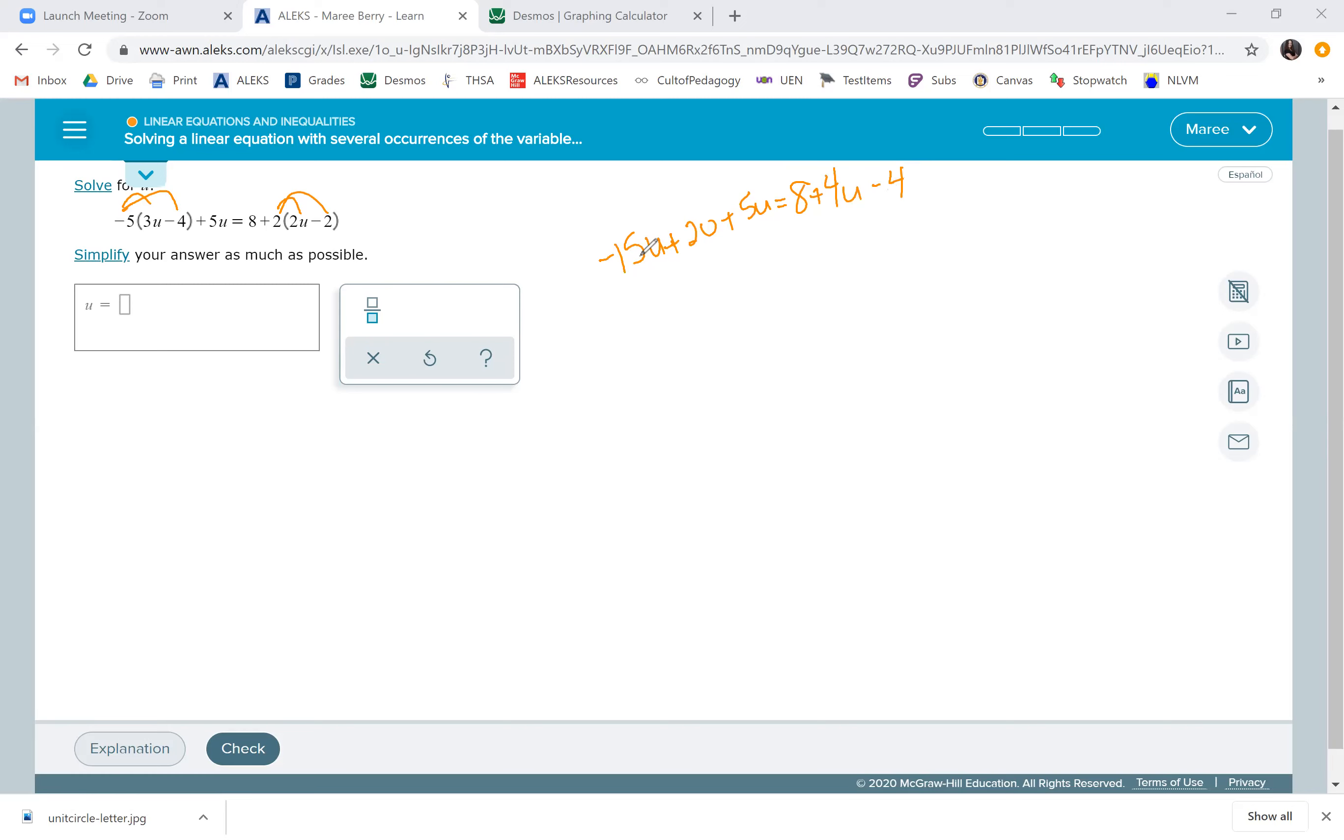Now I'm going to combine like terms. Negative 15u plus 5u is 10u plus 20 equals 4u, and 8 minus 4 is plus 4.